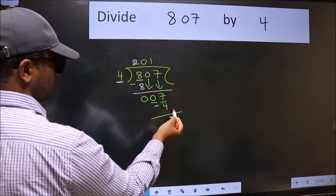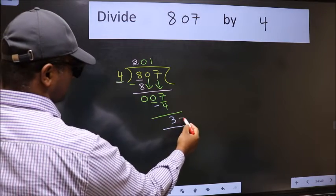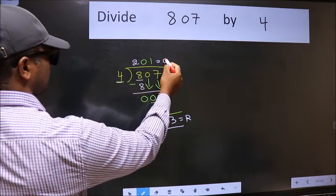No more numbers to bring down, so we stop here. This is our remainder and this is our quotient.